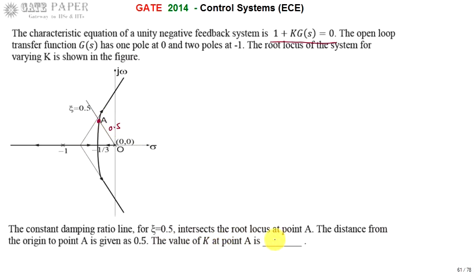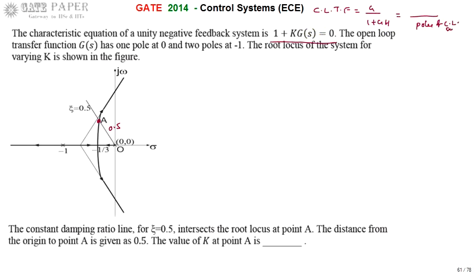The characteristic equation is the denominator of the closed-loop transfer function equated to zero. The general closed-loop transfer function is G/(1 + GH), and its denominator, when set to zero, gives the characteristic equation. This denominator is related to the poles of the closed-loop system.